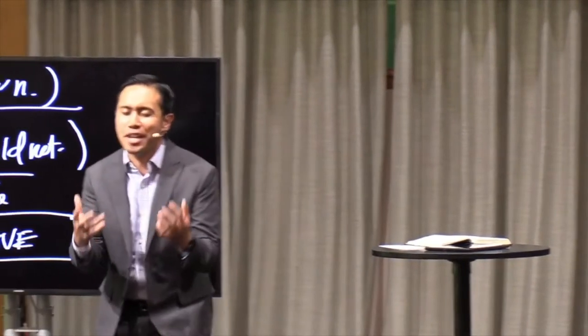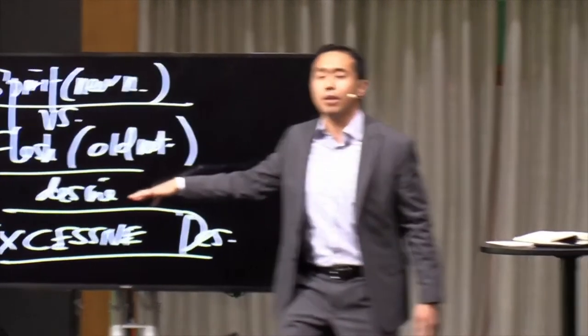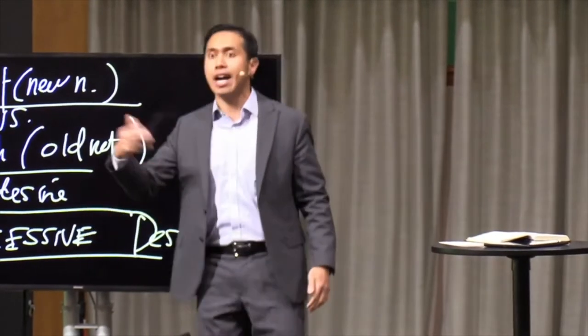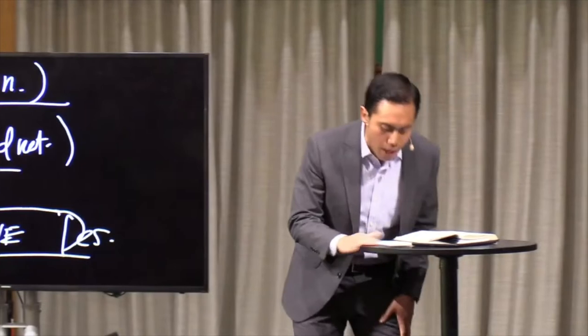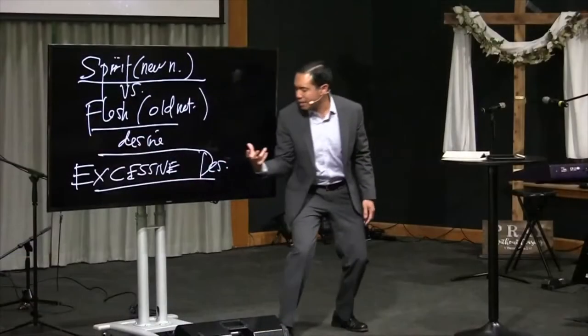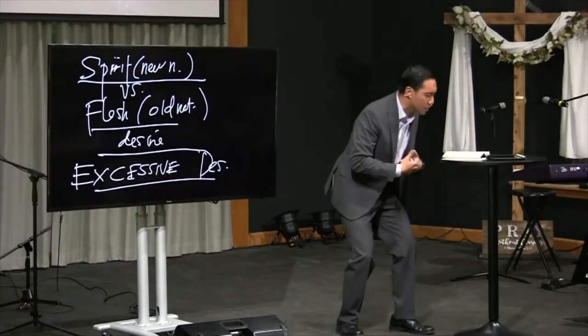Meaning that not only do I like mint chocolate chip, an excessive desire would mean that I have pictures of mint chocolate chip ice cream on my mirror in my bathroom, and I have five containers of mint chocolate chip in my freezer, and after every meal I'm thinking about mint chocolate chip ice cream. It's the only thing I can think about. This is what Paul is saying. We have desires, but what Paul is saying is that the flesh has excessive desires.